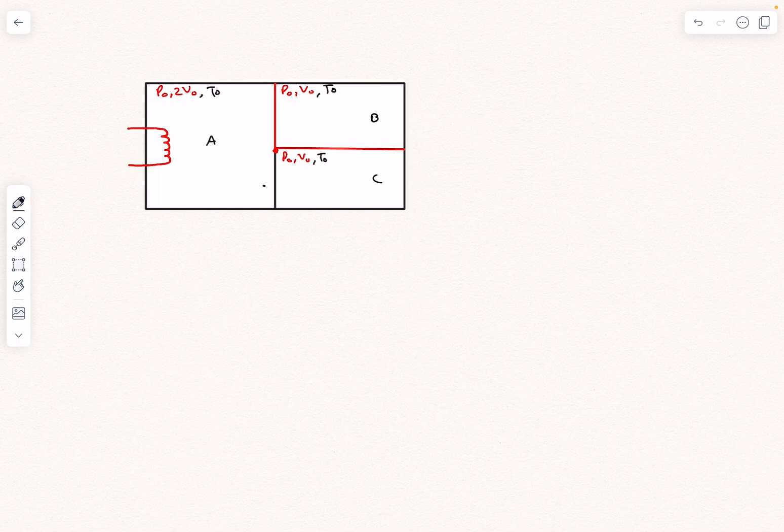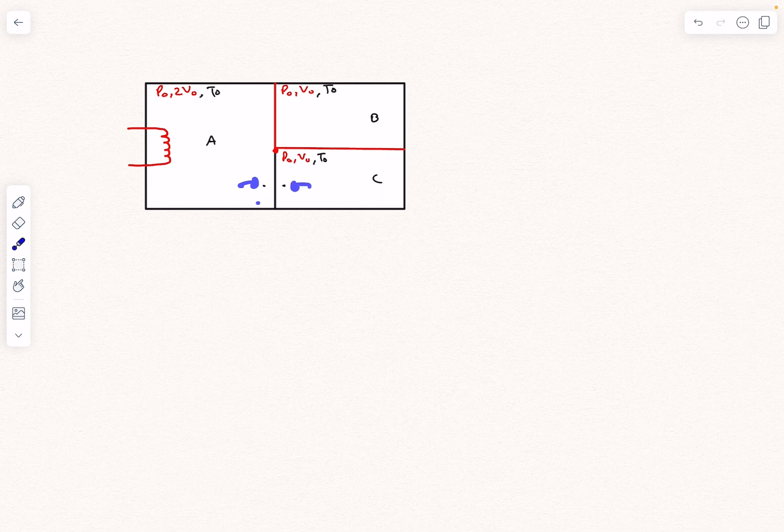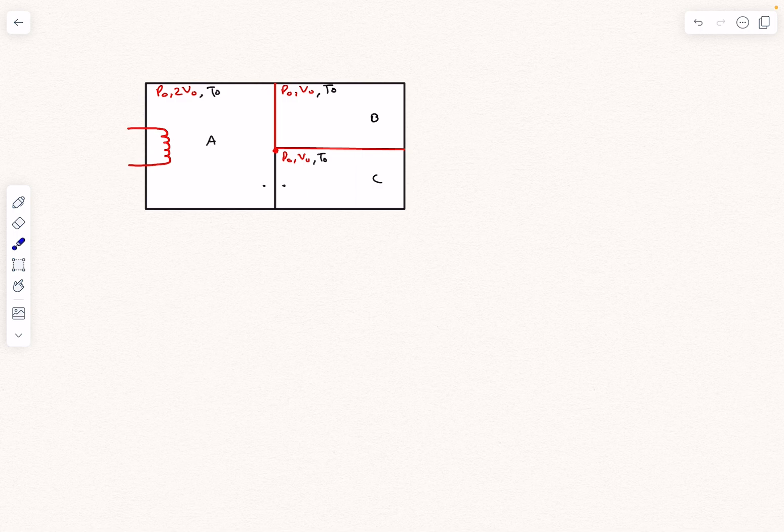If you consider any two points across this conducting wall, the temperature in section A is greater than the temperature in section C, and there will be heat transfer from section A to section C. This wall was still non-conducting, so no heat transfer will happen from A to B.